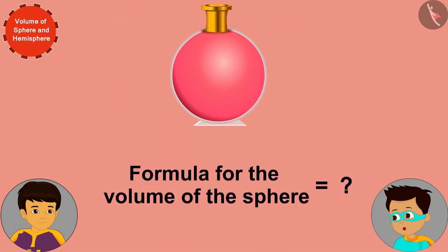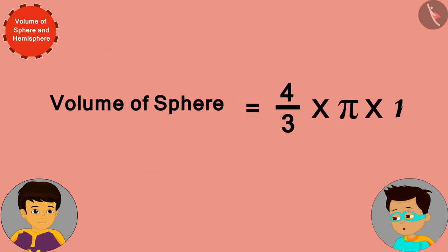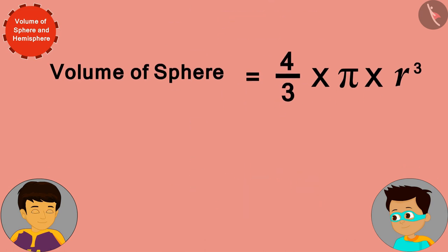Absolutely! The volume of a sphere is equal to the product of 4 by 3, pi, and r cube, where r is the radius of the sphere. Well done! Now to solve this, just replace r in this formula by the radius of the spherical bottle.